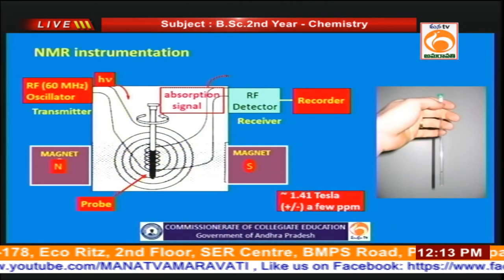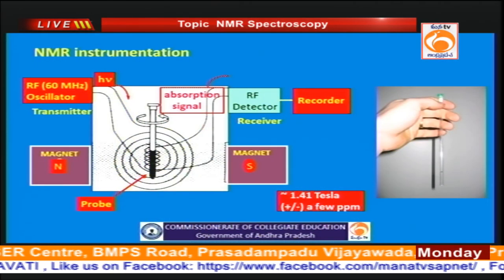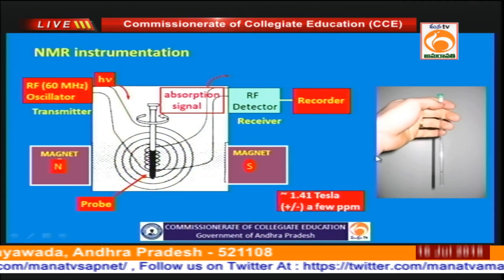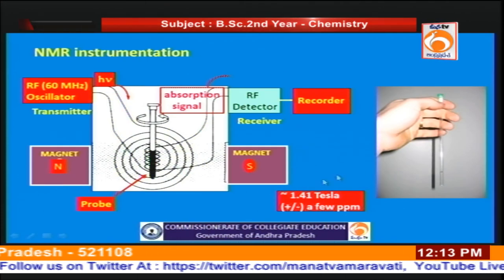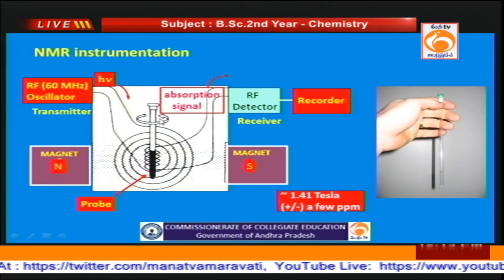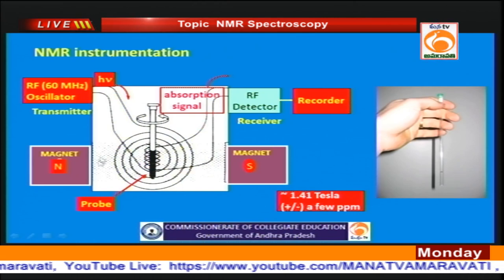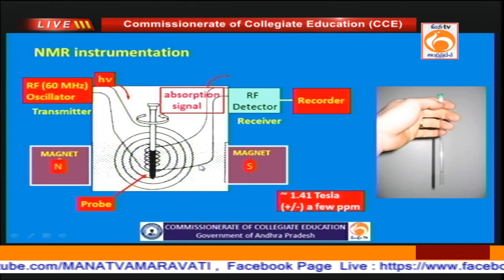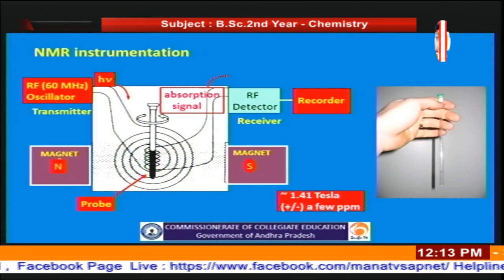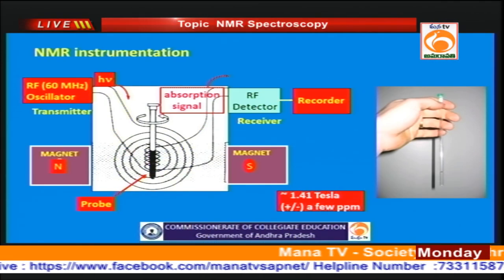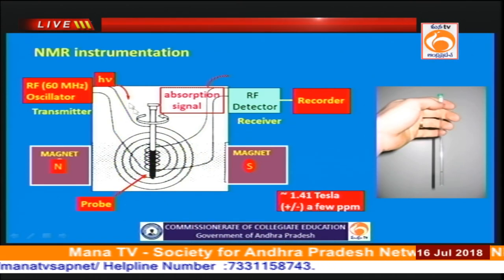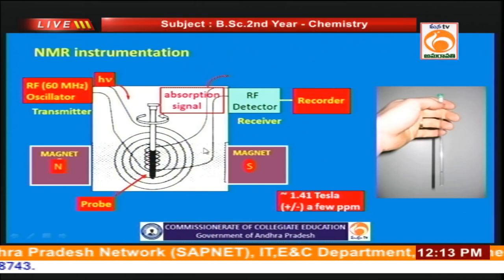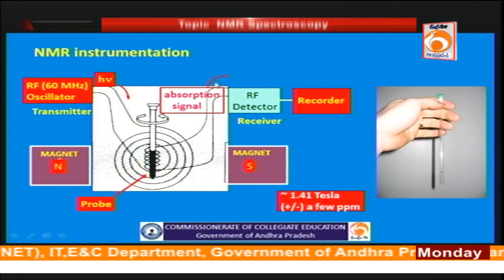This is the block diagram of the NMR spectrometer. We take the sample in a tube — generally the NMR tube diameter is in the range of 5 millimeters, and this tube is inserted between the two magnets. Generally we use ultra magnets or superconducting magnets based on the field strength given in Tesla. We apply a radio frequency that enters the instrument and the absorption signal leaves the instrument.